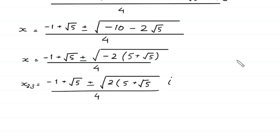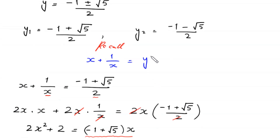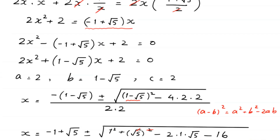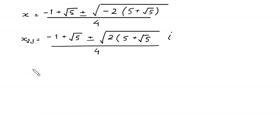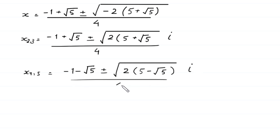Now solving for the second value of y, which is (negative 1 minus square root of 5) over 2, we get the other two values of x: x₄ and x₅ equal (negative 1 minus square root of 5) plus or minus square root of 2 times (5 minus square root of 5) times i, divided by 4.